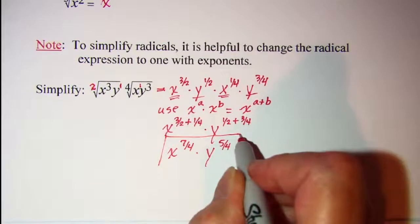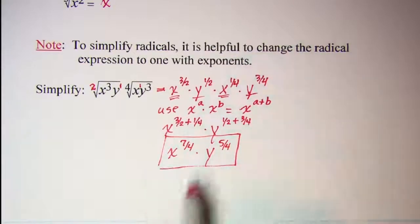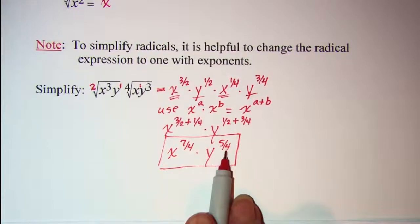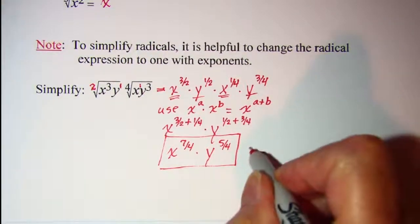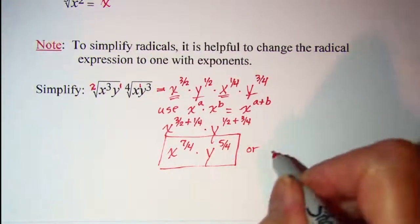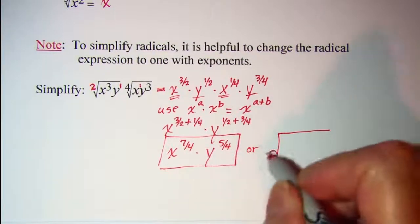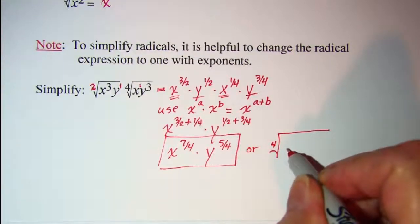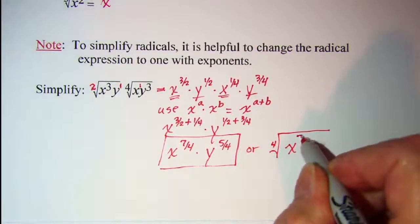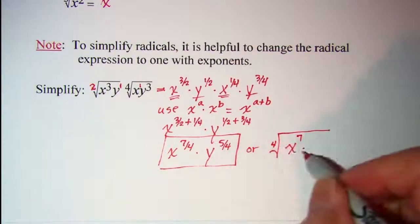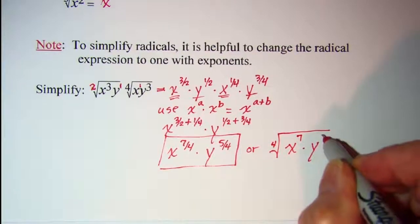So this is the simplified expression. Now since these both have a denominator of 4 I could write this with a radical. The index on the radical is 4 and the x is to the 7th power and the y is to the 5th power.